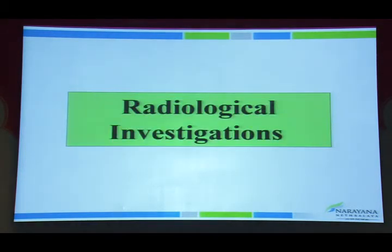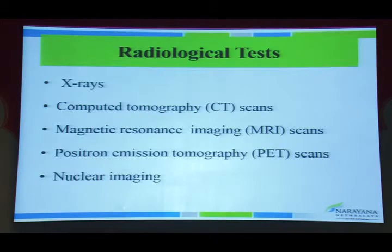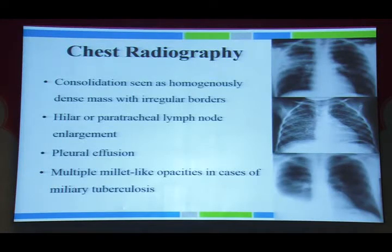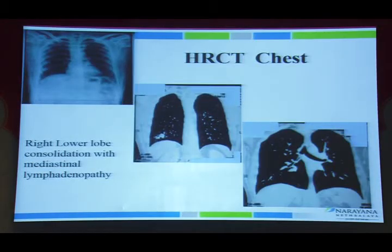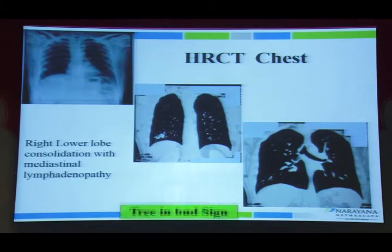Moving to radiological investigations: chest X-ray is commonly ordered before starting systemic steroids, immunosuppressives, or biologics to rule out tuberculosis. Findings may include consolidation, hilar lymphadenopathy, effusion, or miliary opacities. HRCT has become a standard investigation for pulmonary pathology. In one case of pan-uveitis with normal chest X-ray, HRCT showed lower lobe consolidations with mediastinal lymphadenopathy in a 'doughnut sign' appearance, classic for tuberculosis.